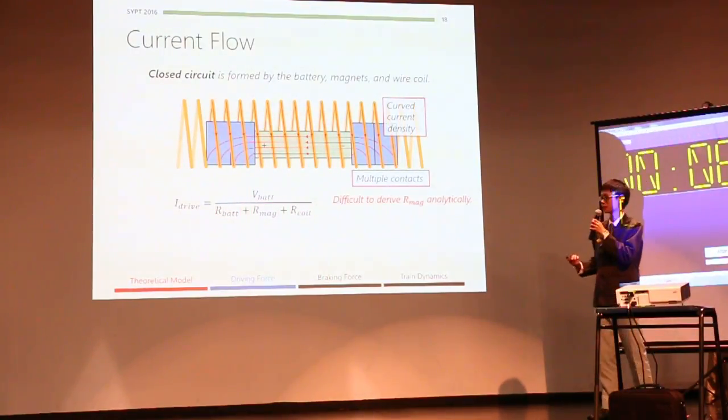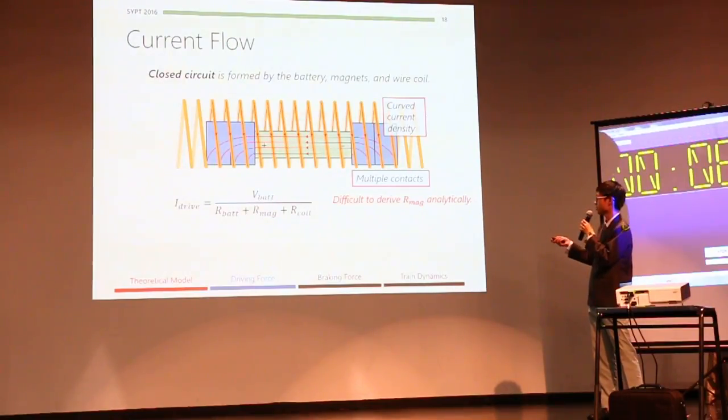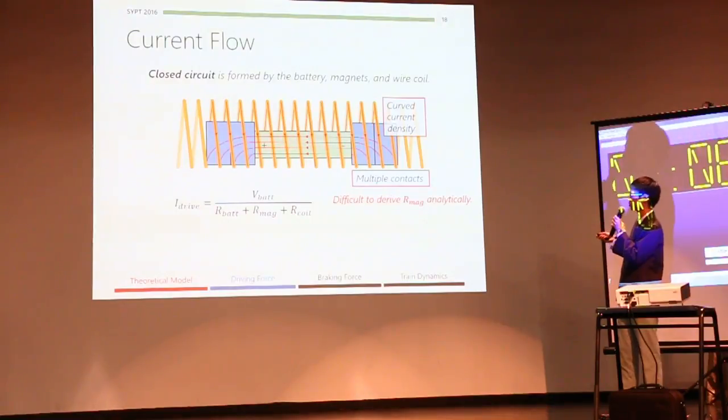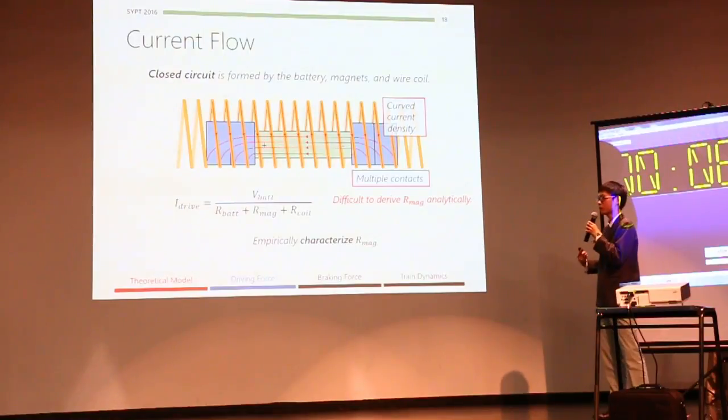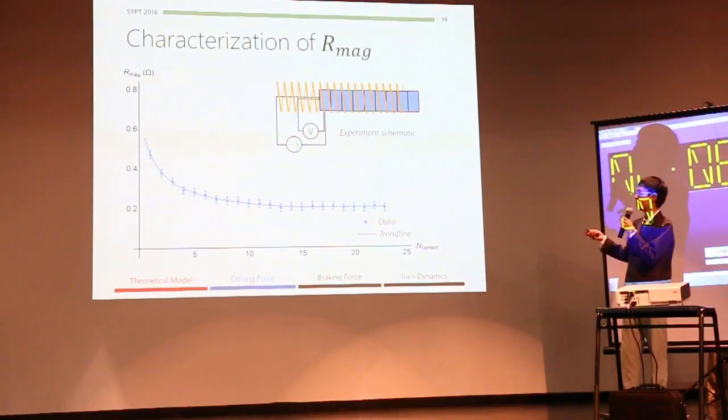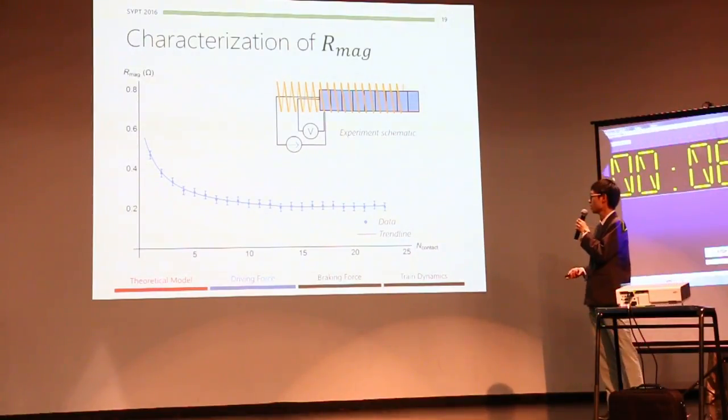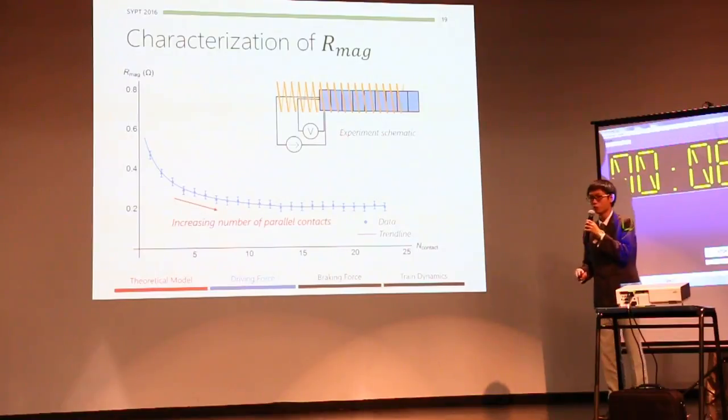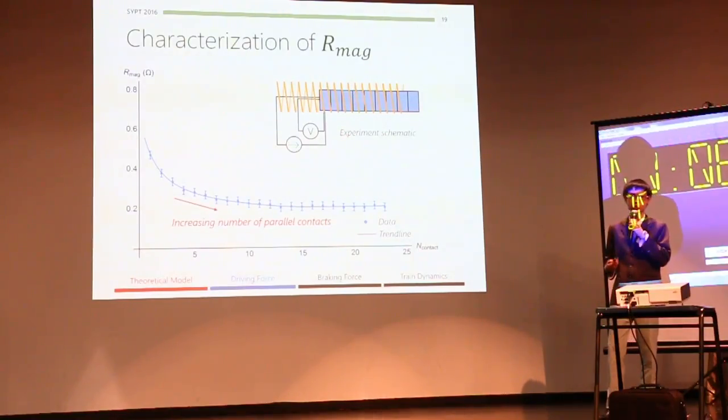And furthermore, we know that the resistance of the magnet itself is hard to calculate, because there's non-uniform current density inside the magnets, and there's also multiple contacts between the magnets and the wire coil. And therefore, we resort to empirical characterization of RMAG, the resistance of the magnets. Here we see a measured graph of RMAG against a number of parallel contacts, and we see the expected decreasing trend. We use this graph consistently in our theoretical prediction.